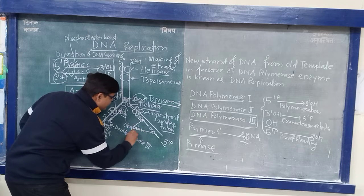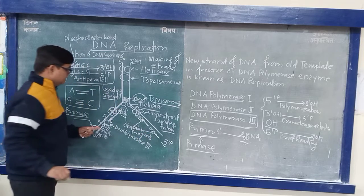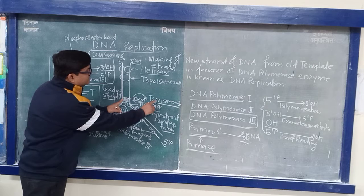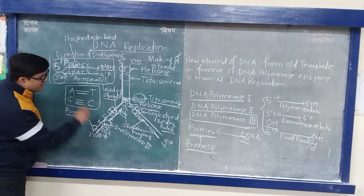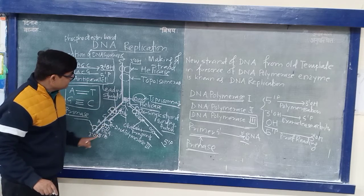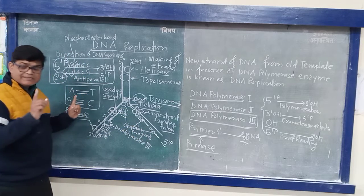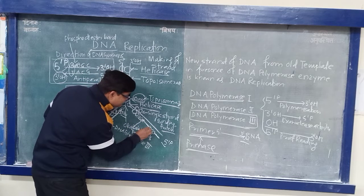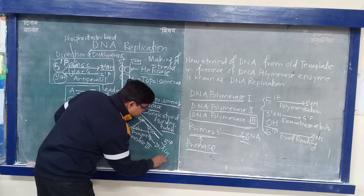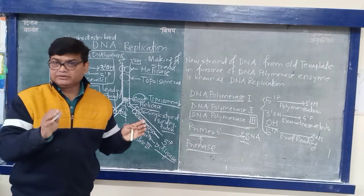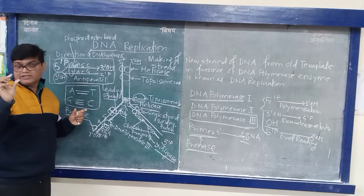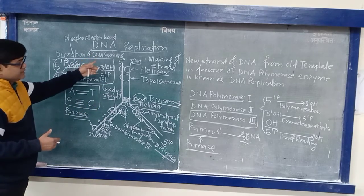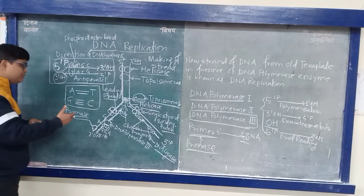In the case of the leading strand, there is continuous synthesis of DNA. As helicase opens the helix, topoisomerase relaxes the strain, primase forms the primer, and DNA Polymerase 3 continuously synthesizes the DNA strand. At the last end you will find a small gap between two DNA segments, and that gap will be joined together by DNA Ligase.